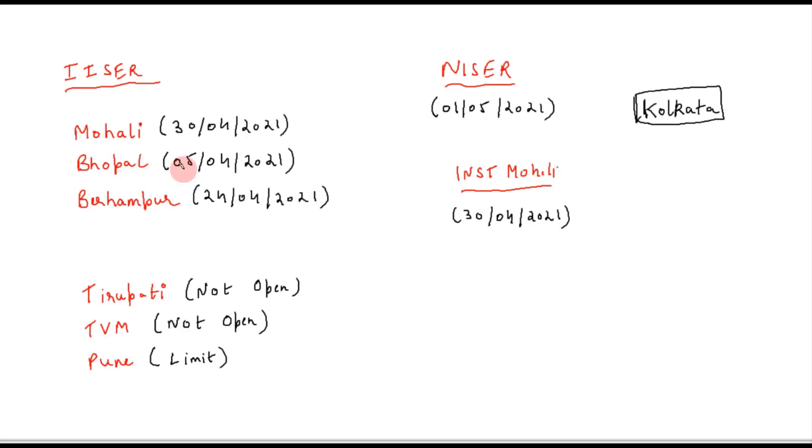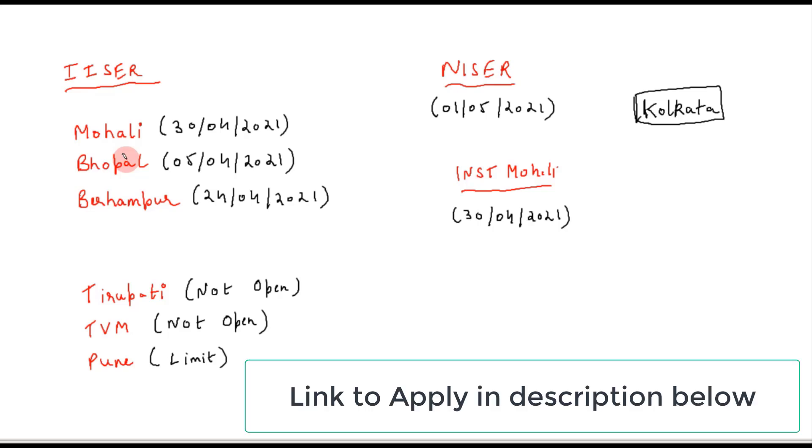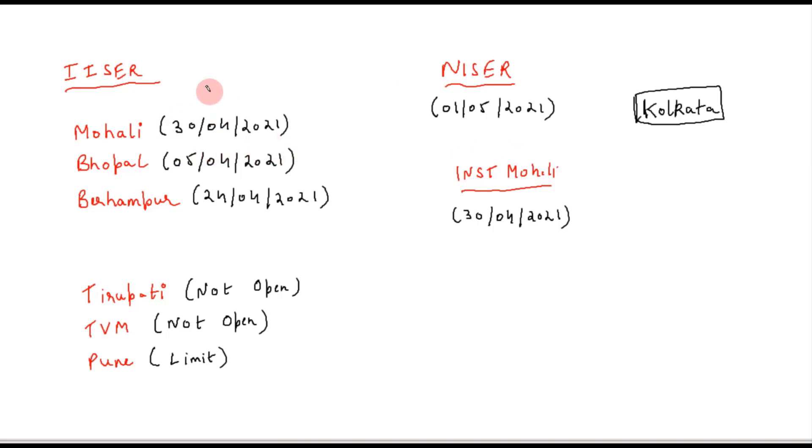If I talk about IISERs, we have seven IISERs. Among those, three of them are now open for PhD program for the August 2021 session. So Mohali's last date is 30th April 2021, and they're accepting candidates based on the GATE score or GATE qualification. Then we have Bhopal—for the PhD program, their last date is 5th April 2021, so you need to be careful and apply quickly for this particular IISER. And then we have IISER Behrampur, for which it is 24th April 2021.